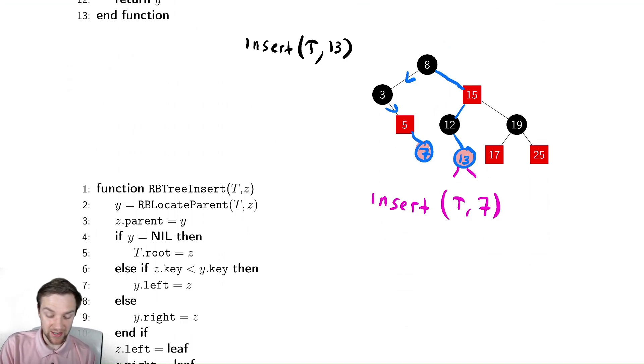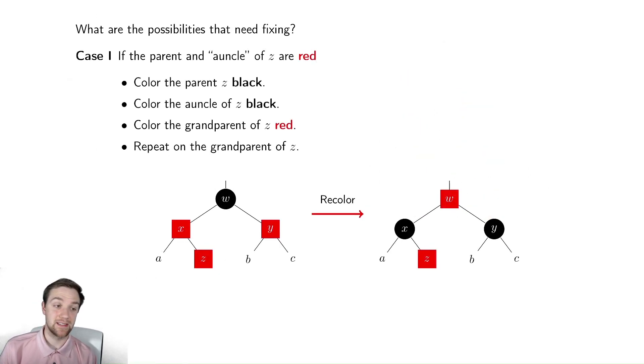the problem that we're going to encounter is potentially sequential red nodes. We're going to analyze this by figuring out what ways could we possibly break it. And we're just going to divide those into different cases.